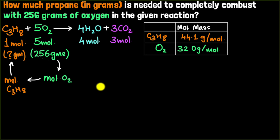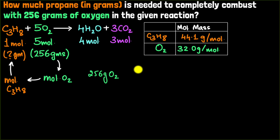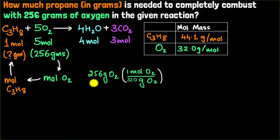It'd be a great idea to pause the video and try this yourself. We start with what's given: 256 grams of oxygen. The first step is to convert grams to moles using the conversion factor. I need moles on the numerator and I want to cancel grams, so I write it as one mole of O₂ per 32 grams of O₂. The grams cancel out and I'm left with moles of oxygen.